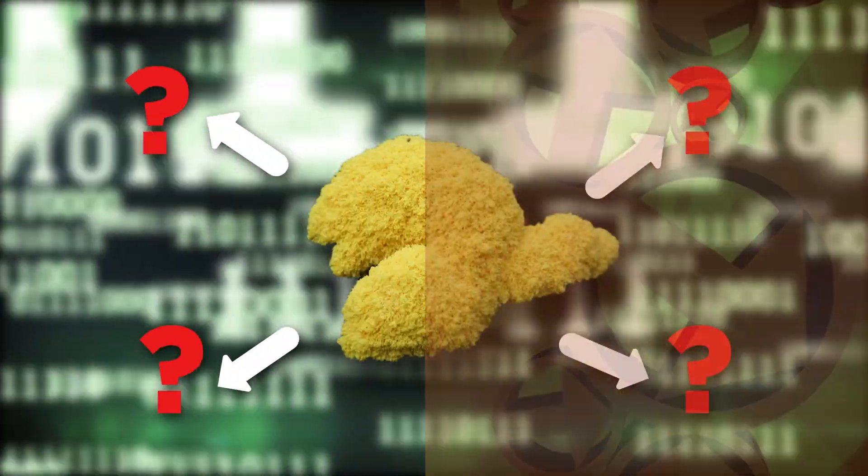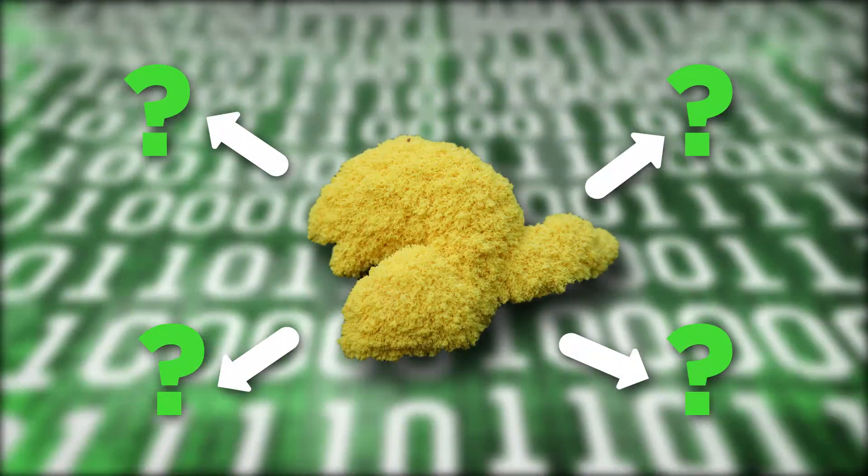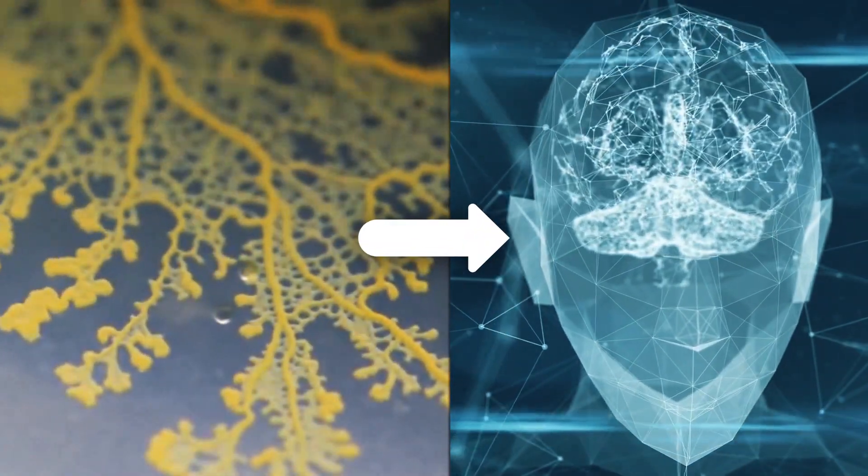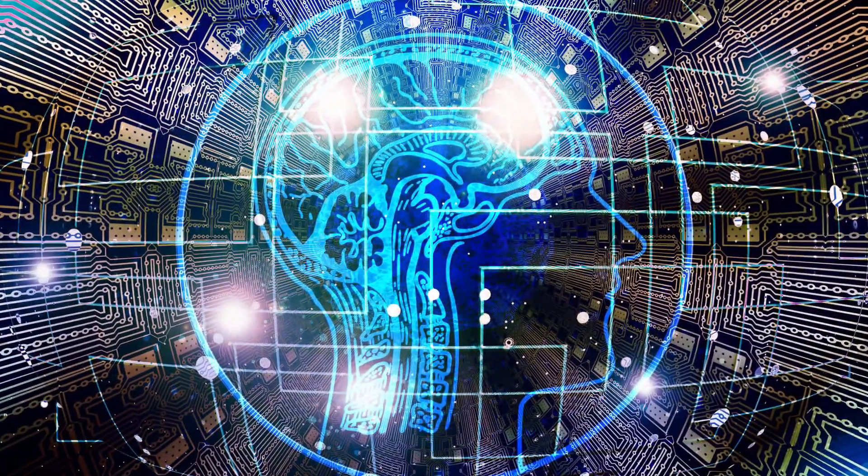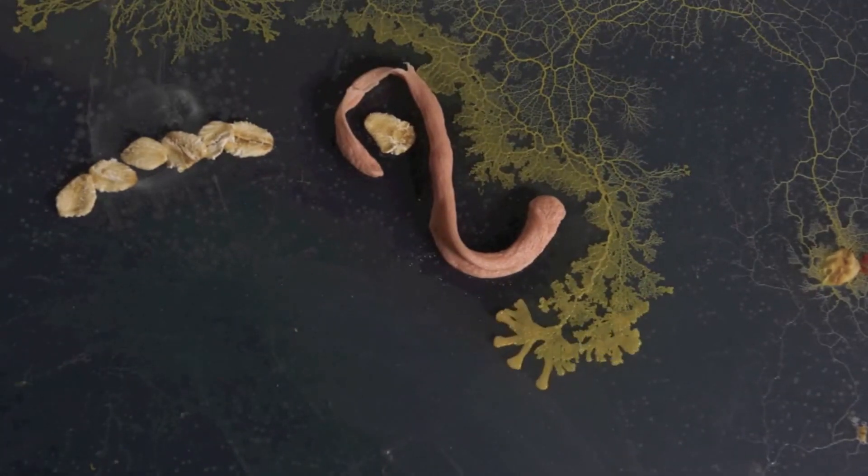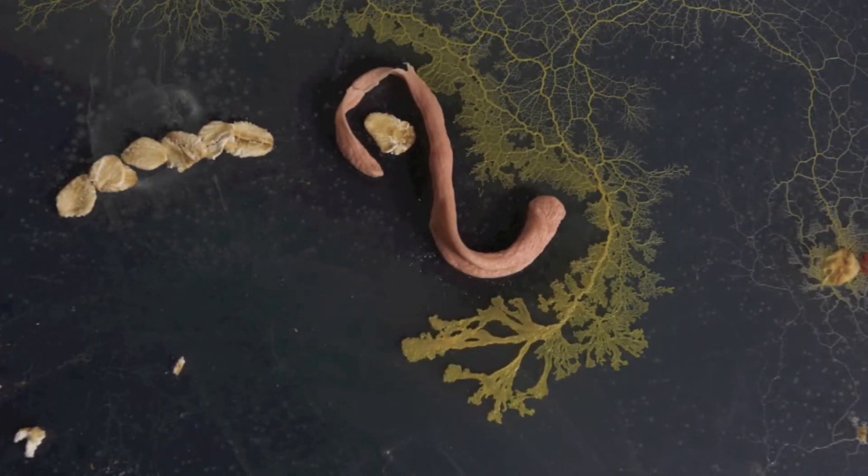There's also a lot of potential use if we can crack the algorithm that governs slime mold's decision-making abilities. We could implement this decoded set of rules into artificial intelligence networks of our own creation. Slime mold's impressive ability to respond to disruptions, as well as its adaptive decision-making, could prove extremely useful in AI transit systems, as well as self-driving car networks.